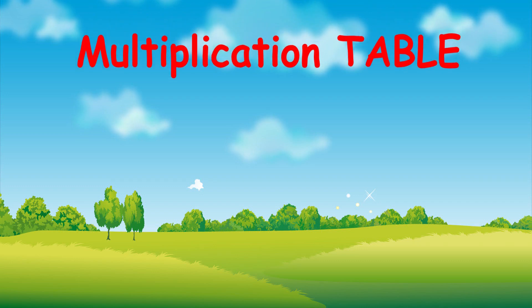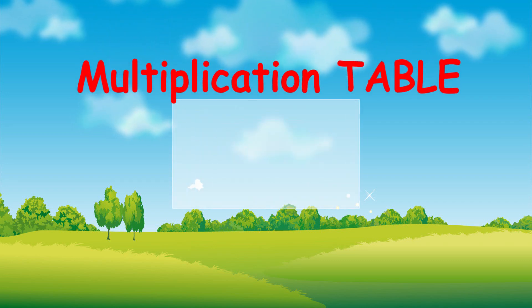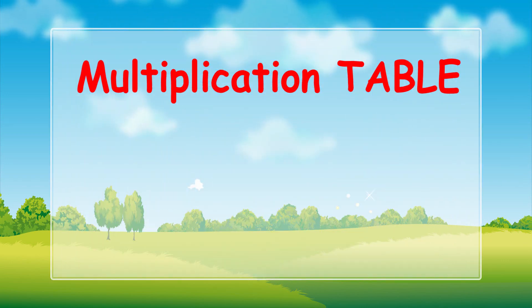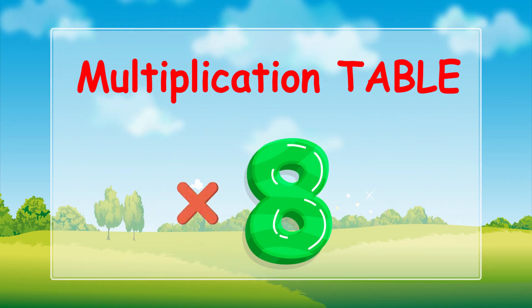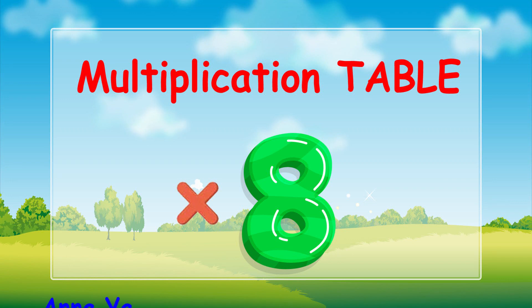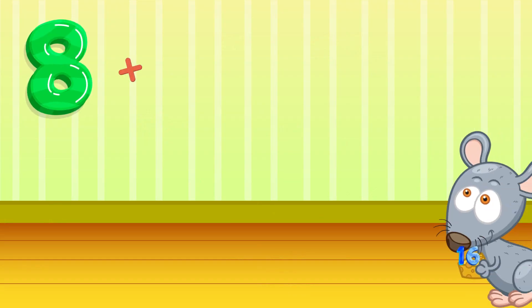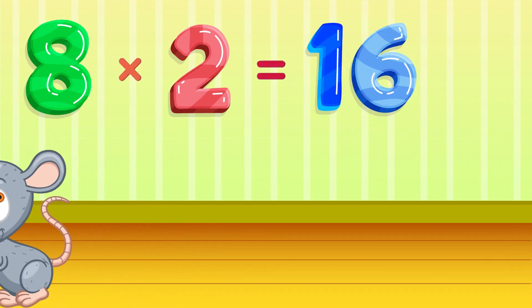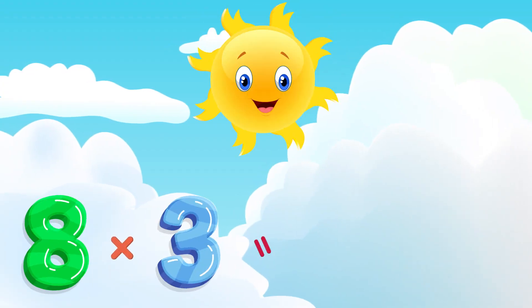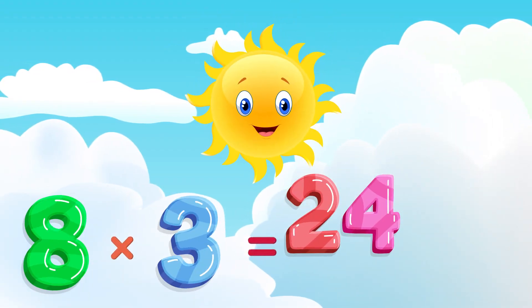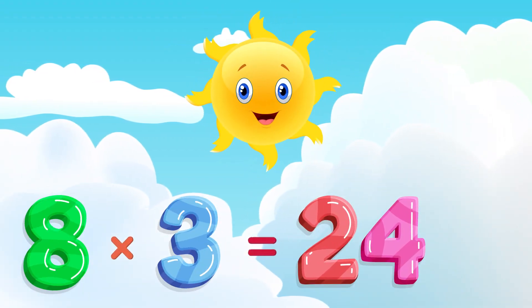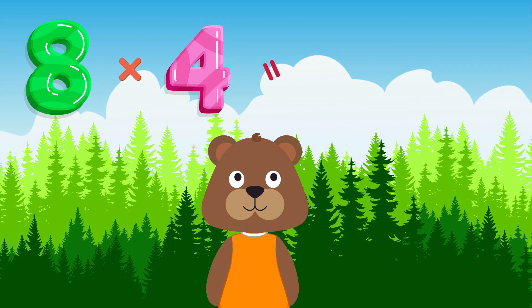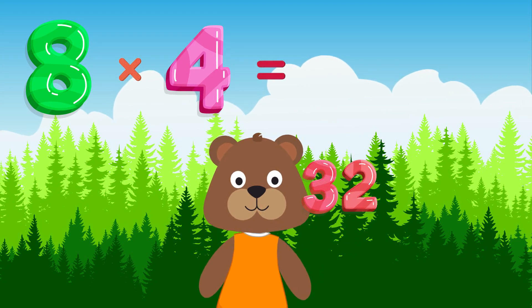Eight times table. Eight times two is sixteen, eight times three is twenty-four, eight times four is thirty-two.